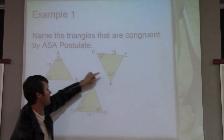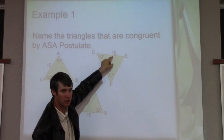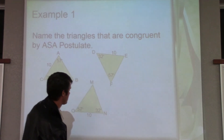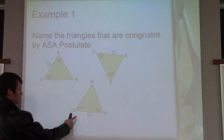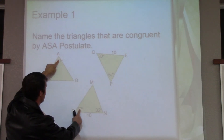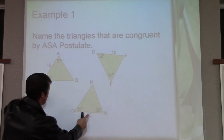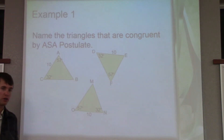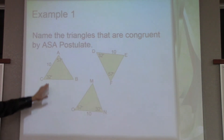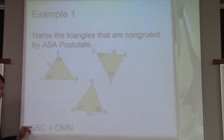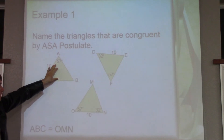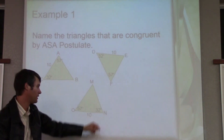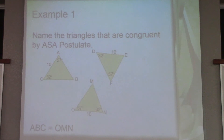Here we have angle-angle-side, so we can't use angle-side-angle for this one. But check this one out: 57, 57, 32, 32, 10, and 10 — so we have angle-side-angle as well. So my two triangles that would be congruent would be ABC and OMA, congruent to one another.